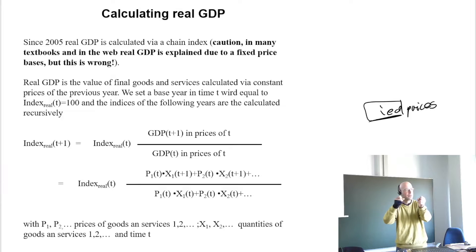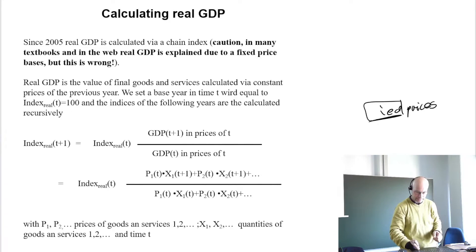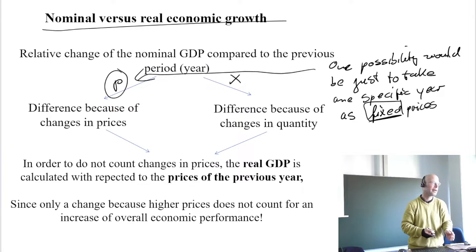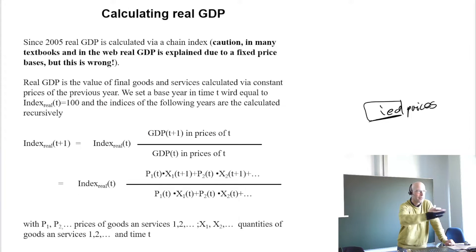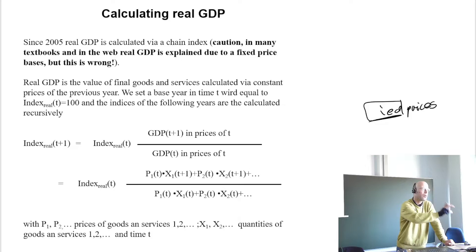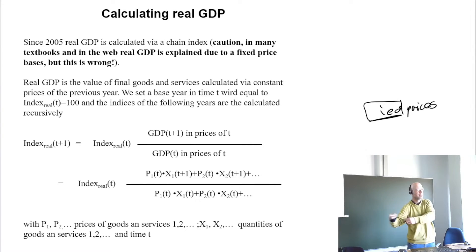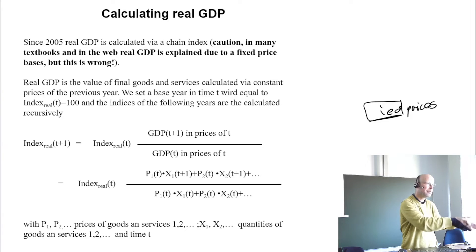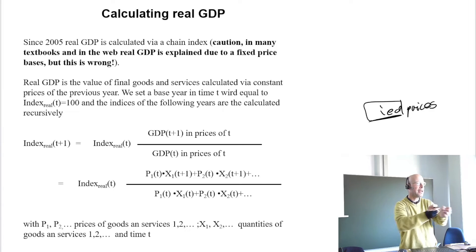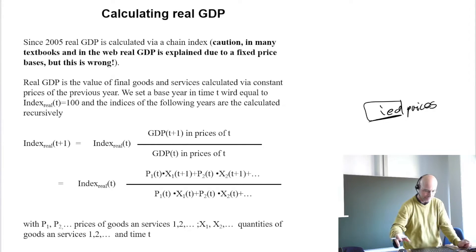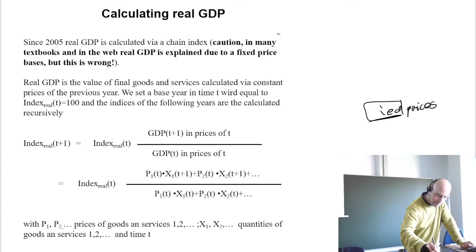This means we always change the price basis every year. But for every year, looking back one year, we always get rid of the price effect. There is also a nice property in updating the price basis every year: all the growth rates are stable. We do not have this switch in the growth rate numbers compared to the fixed price basis. This is a really nice property because your time series is stable.